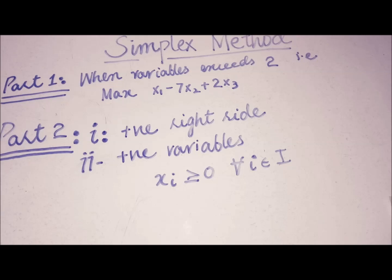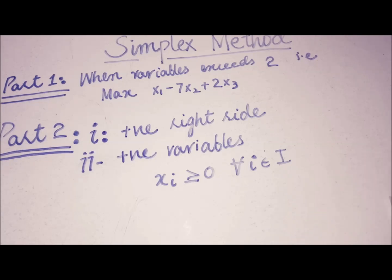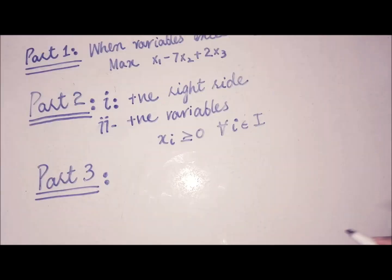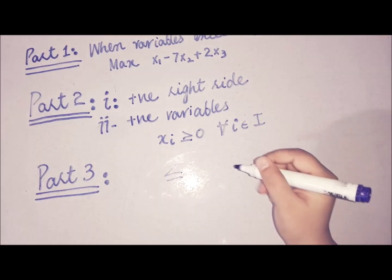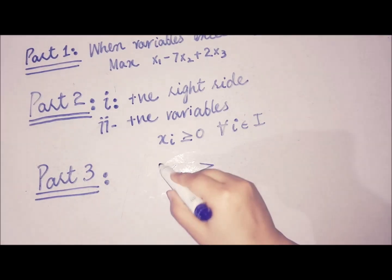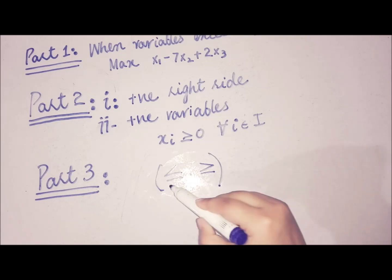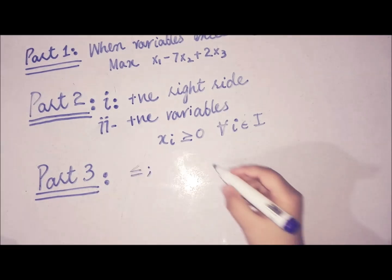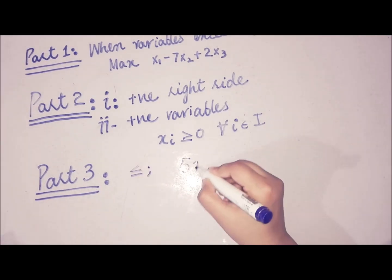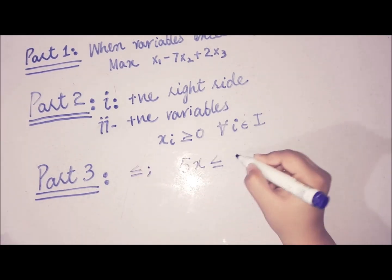The third part is about the possibilities of the constraints in the simplex method — specifically, how we convert an inequality into equality form. There are two main possibilities: less than or equal to, and greater than or equal to. First, consider the constraint 5x less than or equal to 50.